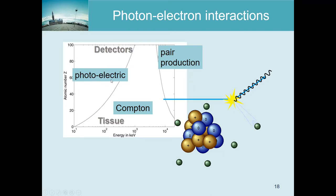The photoelectric effect means the photon hits an electron that is strongly bound to the atom. All of the energy of the photon is used to free that electron from the atom, and the remaining energy is given to the electron as kinetic energy. So the photon is completely gone - it is absorbed and we lost it.